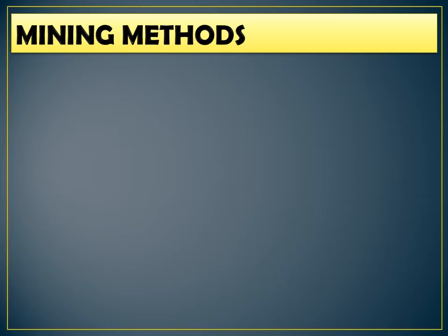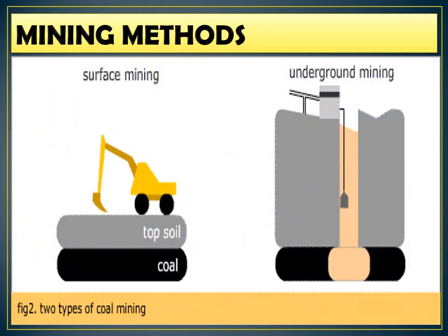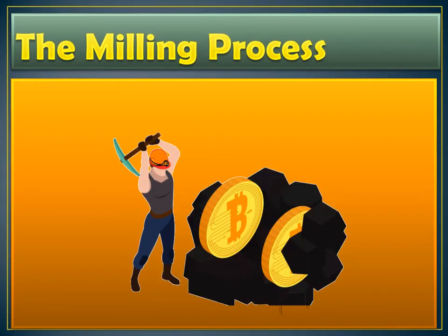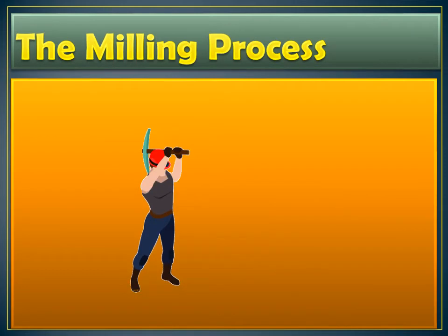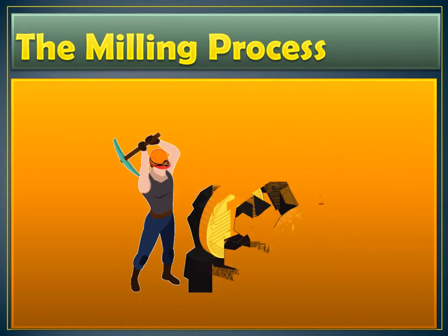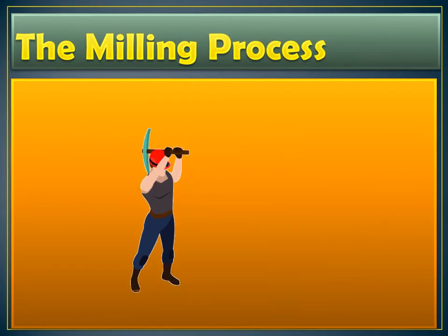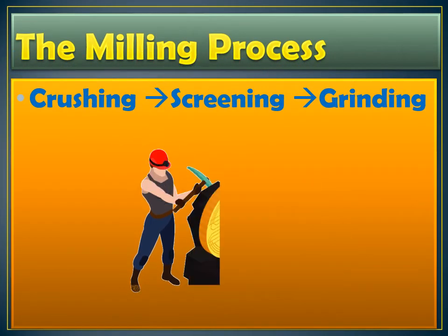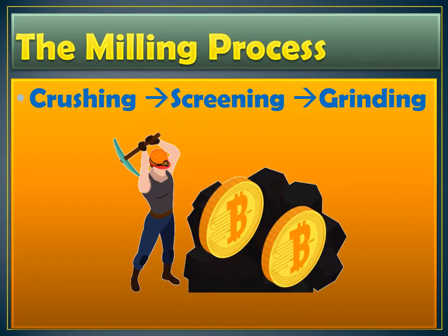Moving on, let's talk about the mining methods. There are two main methods of mining. First is surface mining, which includes the extraction of ore minerals that are close to the Earth's surface. The second one is underground mining, which includes the extraction of ore minerals from the ore body that is deep under the Earth's surface. After mining, the extracted rocks will undergo processes of mineral separation and recovery — the mining process. The materials extracted are rocks composed of both ore and waste material, so this involves crushing, screening, and grinding or pulverizing.